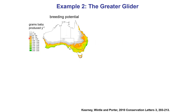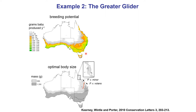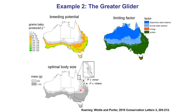This map shows the number of grams of baby calculated for the greater glider across its range. You can also ask what the optimal body size would be — and we found that a smaller body size is better in the more northern part of the range, which is in fact what you observe: there is a smaller version of the greater glider in the northern part of its range. You can also map what's limiting: in colder areas such as the alpine region and Tasmania, the model predicts they'd run out of energy and not be able to reproduce. In inland areas, water budget in September — the dry season — would limit reproduction.